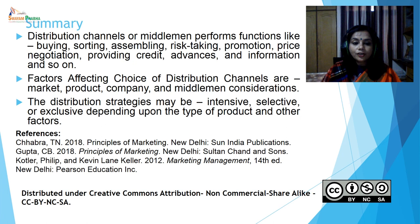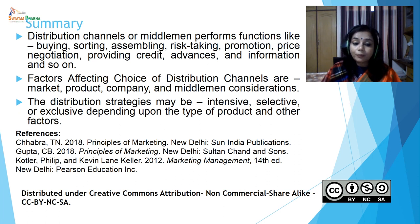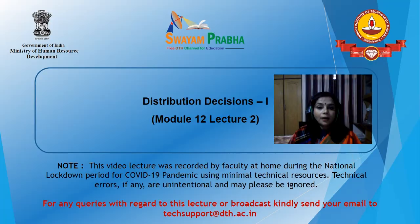In summary, distribution channels or middlemen perform functions like buying, sorting, assembling, risk taking, promotion, price negotiation, providing credit, advances, and information. The factors affecting choice of distribution channel are market consideration, product consideration, company consideration, and middleman consideration. The distribution strategies may be intensive, exclusive or selective depending upon the type of the product and other factors. Thank you, students. This was Distribution Decisions Part 1, Module 12, Lecture 2.